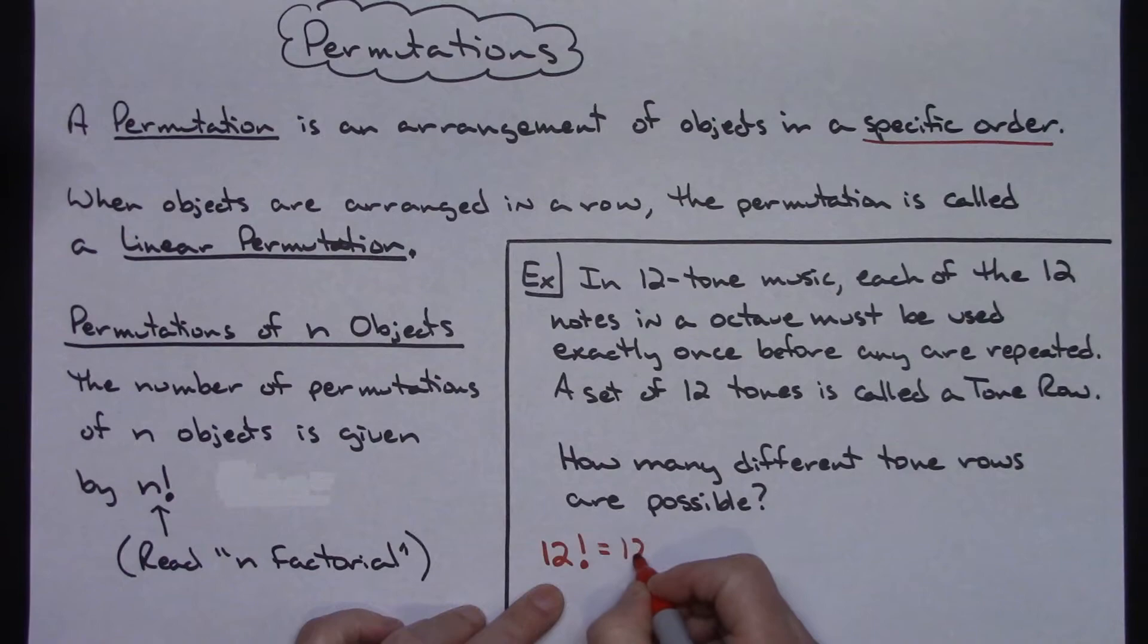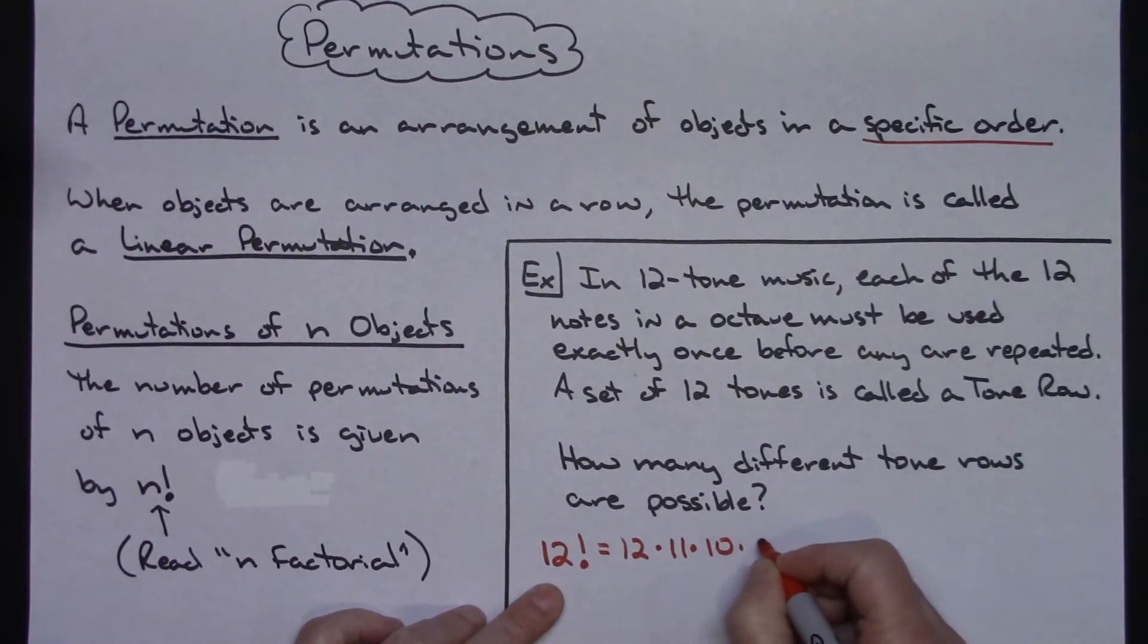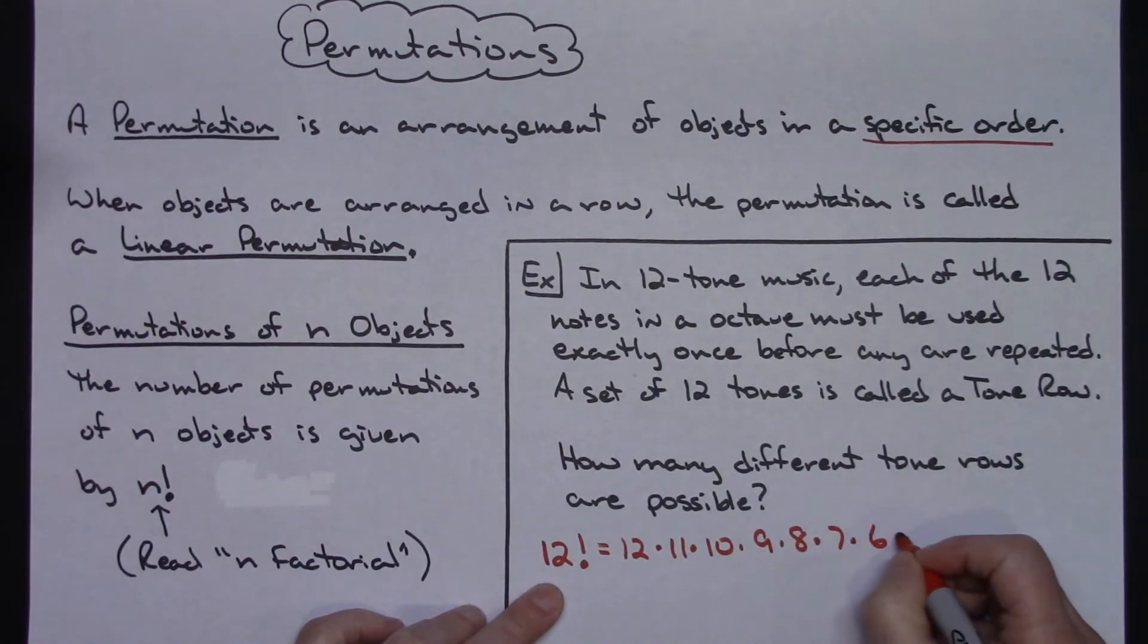So 12 factorial would be 12 times 11 times 10 times 9 times 8 times 7 times 6 times 5 times 4 times 3 times 2 times 1.